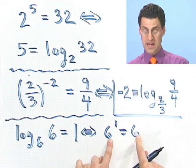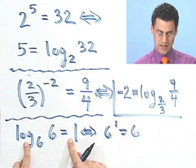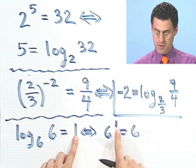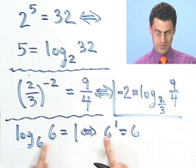And certainly that's a true statement. So this statement is identical to this because a log is the exponent. So there's the exponent I have to raise the base to in order to get 6.